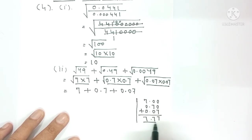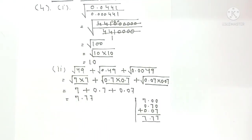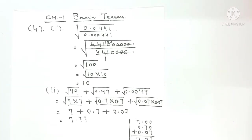Add them: 7 plus 7 plus 7. Your answer is 7.77.